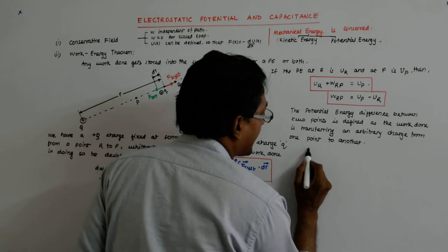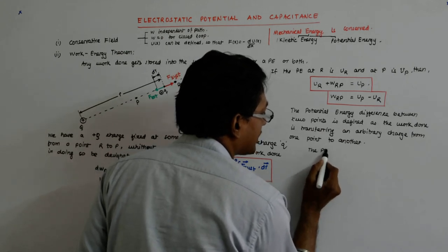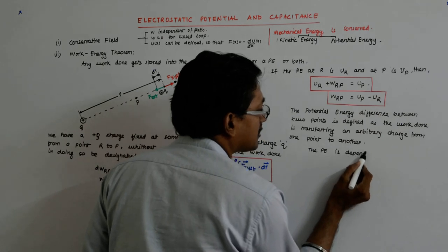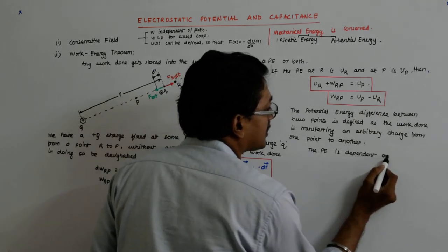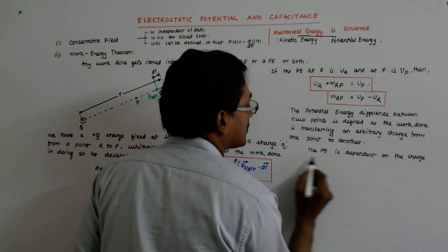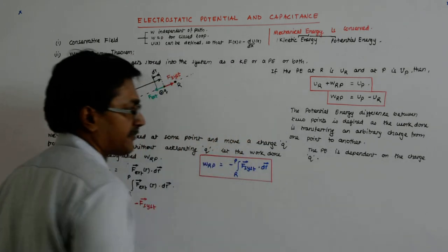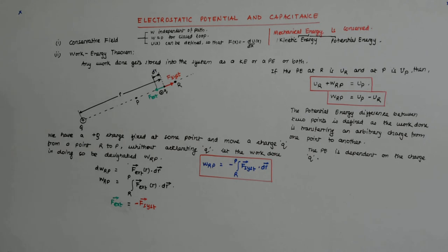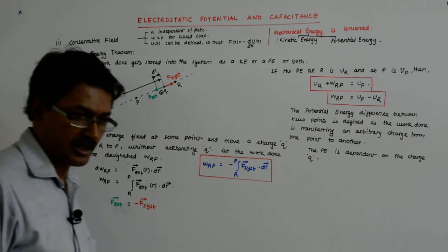So I say that the potential energy is dependent on the charge Q. It is dependent on the charge Q, small q.